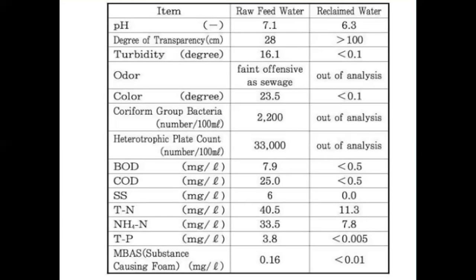A table is shown with water quality parameters comparing raw feed water and reclaimed water. The pH value of raw water is 7.1 and reclaimed water is 6.3. Turbidity values are 16.1 and less than 0.1 respectively. The table also shows BOD, COD, suspended solids, MPN number, and total dissolved solids for both water types.